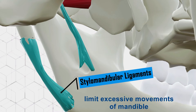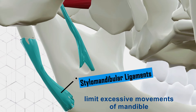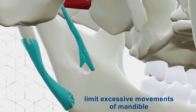The stylomandibular ligament is a thickening of the fascia of the parotid gland. Along with the facial muscles, it supports the weight of the jaw and limits mandibular movements, such as preventing excessive opening.